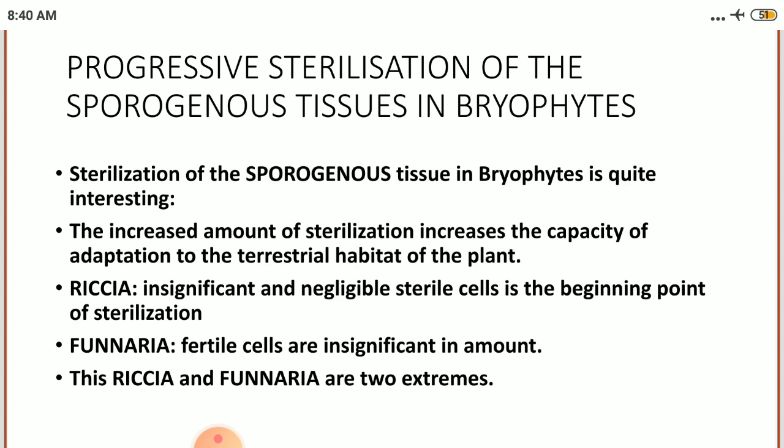Dear students, before discussing the development of bryophytes, particularly the sporophyte, we will discuss about the progressive sterilization of the sporogenous tissue in bryophytes. It is quite interesting. There is an increased amount of sterilization and this increases the capacity of adaptation of the plants to the terrestrial habitat.